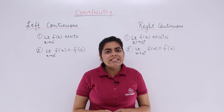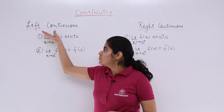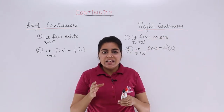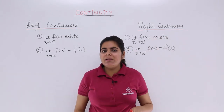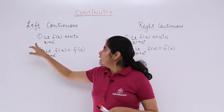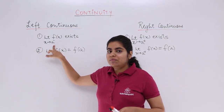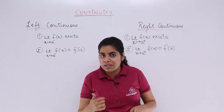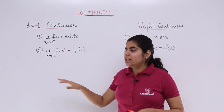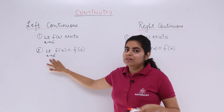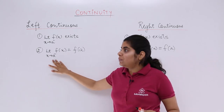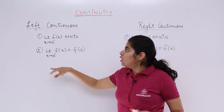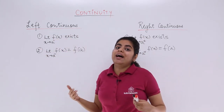In this video, let's see what we mean by left continuous functions and right continuous functions. Left continuous functions simply means two conditions to be followed. The left hand limit of the function should exist — 'a negative' means the left hand limit should exist. The second condition: the left hand limit, whatever value is obtained, should be equal to the value of the function. It does not talk anything about the right hand limit.